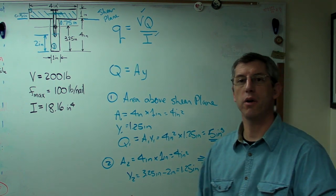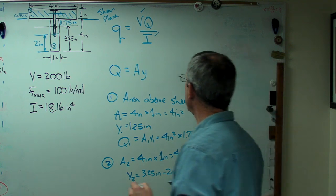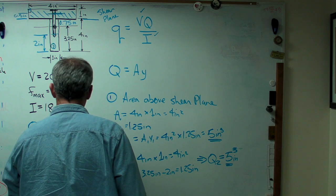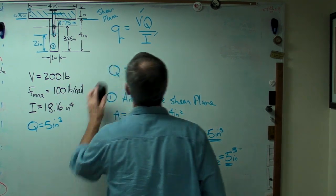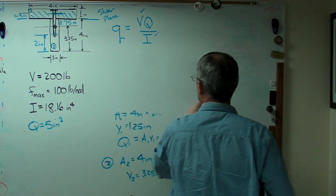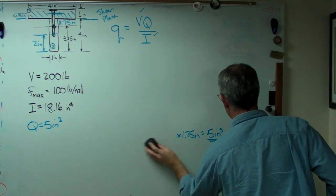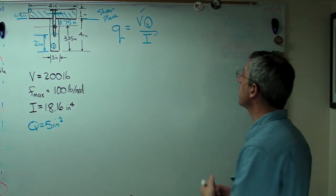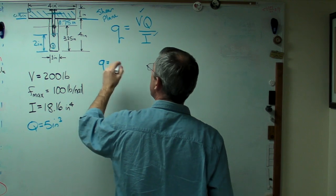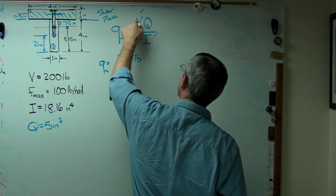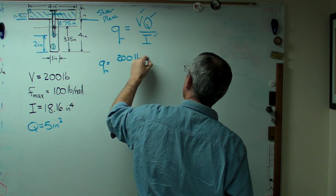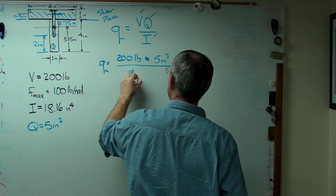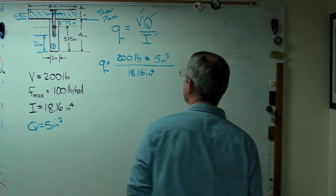It doesn't matter. Now because I've got a relatively small board space to use here, I'm going to write the Q over here and erase the rest of the board. So let's go ahead and finish plugging numbers in here. q equals 200 pounds. That's V. Big Q is 5 inches cubed. And I is 18.16 inches to the fourth.